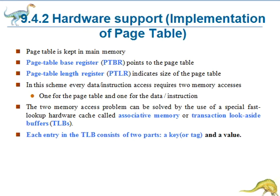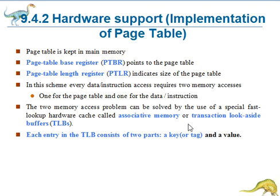Now I am going to explain about Translation Lookaside Buffers, also called TLBs — they are very important. The two memory access problem can be solved by the use of a special fast lookup hardware cache, that is associative memory, otherwise known as Translation Lookaside Buffers. It is a special, small, fast lookup hardware cache. The TLB is associative and high speed memory.